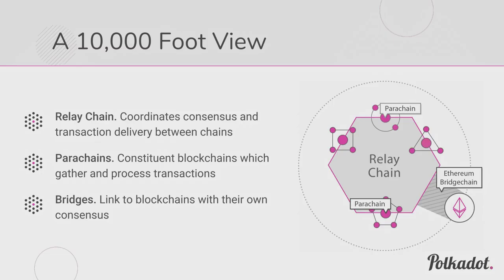At a 10,000-foot view: we have a relay chain that coordinates consensus and message delivery between chains. Then we have the parachains — these attached chains. And lastly there's a special class called bridges, which act like a parachain to the relay chain but are really just a bridge over to some other chain that already exists.